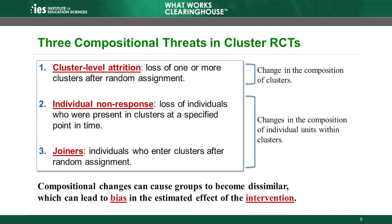Cluster-level attrition changes the composition of the set of clusters that comprise the intervention and comparison groups. In addition to the loss of full clusters, the composition of individuals within the remaining clusters may change. When outcomes are not analyzed for all individuals in the clusters, this can be considered individual non-response. For example, in the remaining classrooms, some students may have switched into other classrooms or transferred out of the school, or been absent on the day the achievement test was administered. All of these students whose outcomes were not measured contribute to individual non-response.